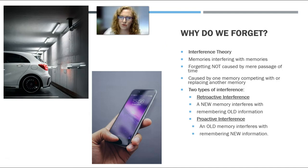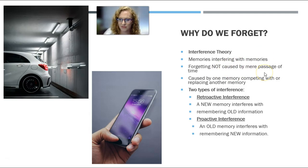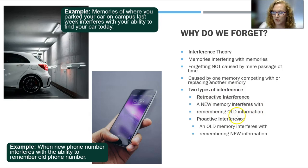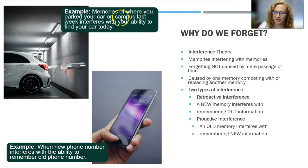So another theory is called interference theory. They say it's not just that things decay — new memories are interfering with old memories, or old memories are interfering with new memories. Forgetting is not caused by the mere passage of time, but by one memory competing with or replacing another. There are two types of interference. Retroactive interference is where a new memory interferes with remembering old information — so a new phone number interferes with your ability to remember an old phone number. Proactive interference is where an old memory interferes with remembering new information — for example, memories of where you parked your car last week interfere with your ability to find your car today. That's why I always park in the same basic location when I go to Walmart, Kroger, or Target.